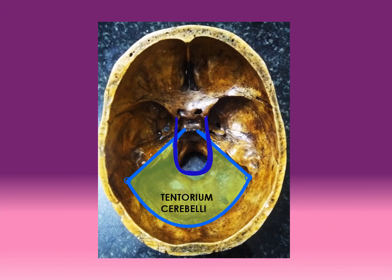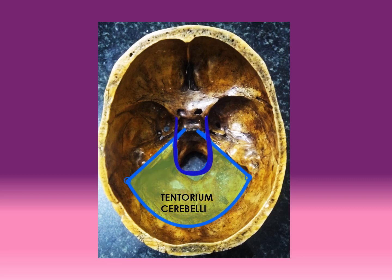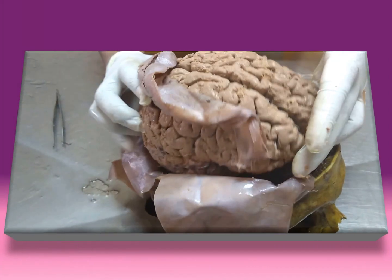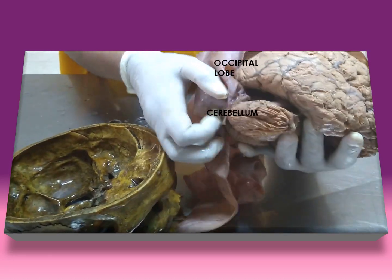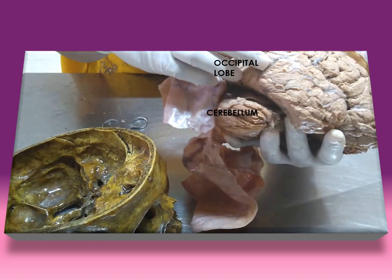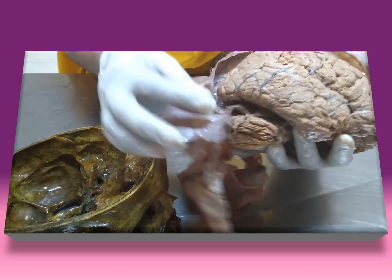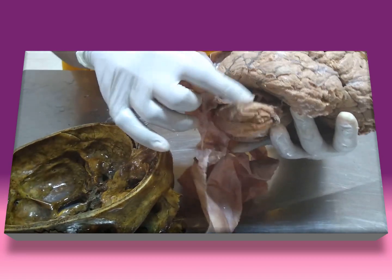Having seen the phax cerebelli in detail, now let's see in detail about the tentorium cerebelli. The tentorium cerebelli is present in the posterior cranial fossa. It separates the occipital lobe of the cerebellum above from the cerebellum below. There is a u-shaped notch along the free margin of the tentorium cerebelli called the tentorial notch. To see the tentorium cerebelli, let's remove the brain from the cranial cavity. You can see the cerebellum below and the occipital lobe of cerebellum above. Between this occipital lobe and the cerebellum, you see a fold of dura mater called the tentorium cerebelli.